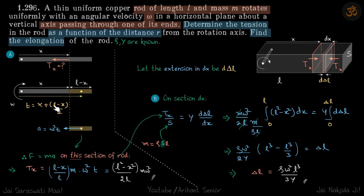The tension will be simply mass of this part of the rod times a, so F equals MA on this section of the rod. T of X is equal to mass of this section, that is L minus X upon L into M into acceleration omega squared T. If you put the value of T here, this is the answer we are going to get. Now for the second part, find the elongation of the rod.